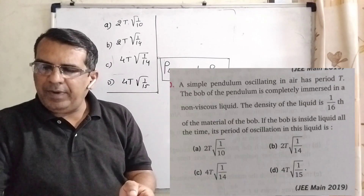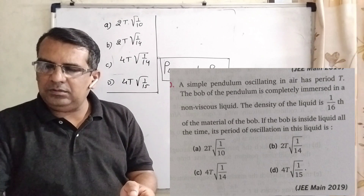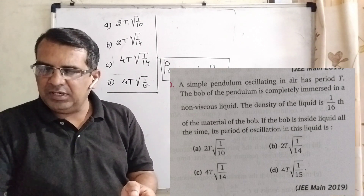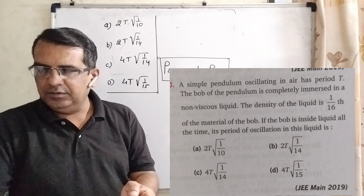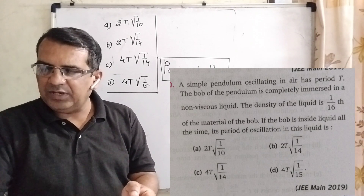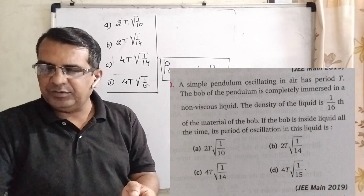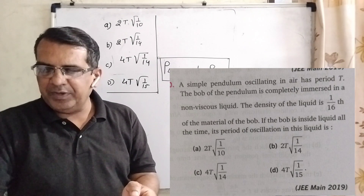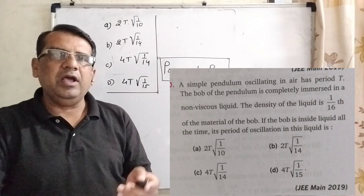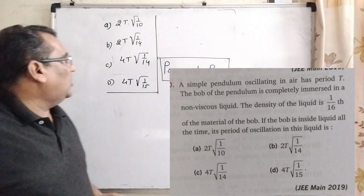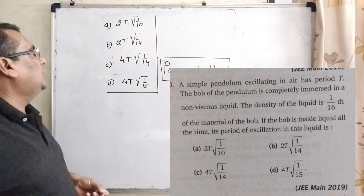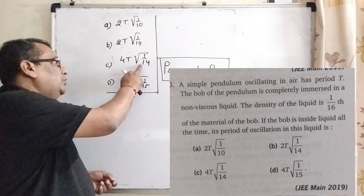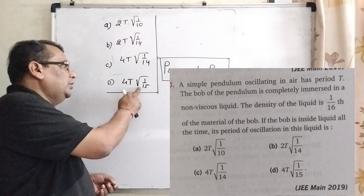Here is the question. A simple pendulum oscillating in the air has period T. The bulb of the pendulum is completely immersed in a non-viscous liquid. The density of the liquid is 1/16th of the material of the bulb. If the bulb is inside the liquid all the time, its period of oscillation in the liquid is — we have four options: Option A: 2T × (1/√10); Option B: 2T√(1/14); Option C: 4T√(1/14); Option D: 4T√(1/15).